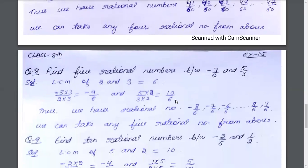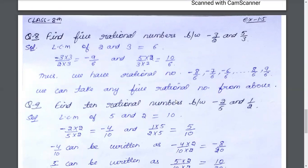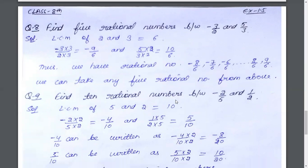Question 8: find 5 rational numbers between minus 3 by 2 and 5 by 3. We have 2 fractions and we need to find 5 rational numbers between them. The denominators are 2 and 3. The LCM of 2 and 3 is 6. So for minus 3 by 2, we multiply numerator and denominator by 3, giving minus 9 by 6.